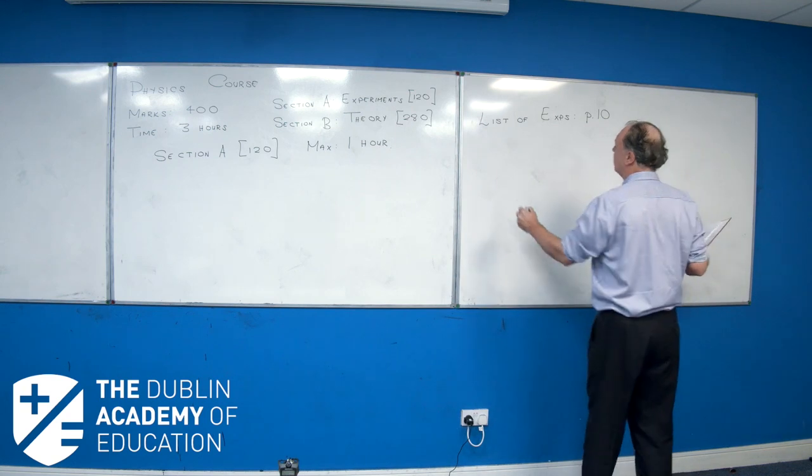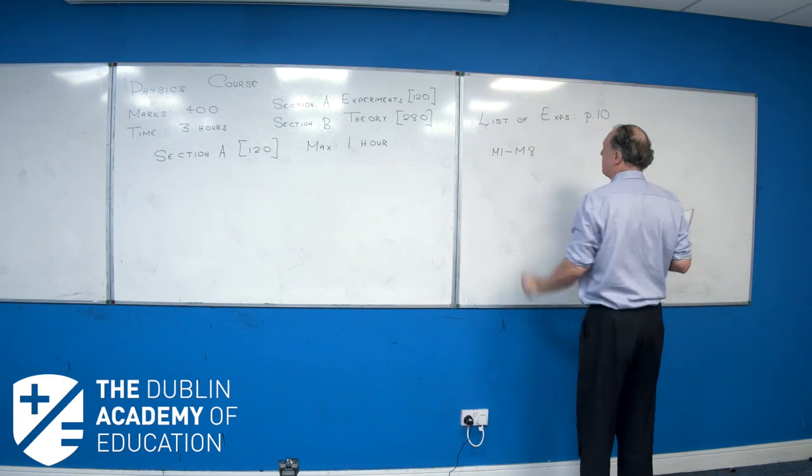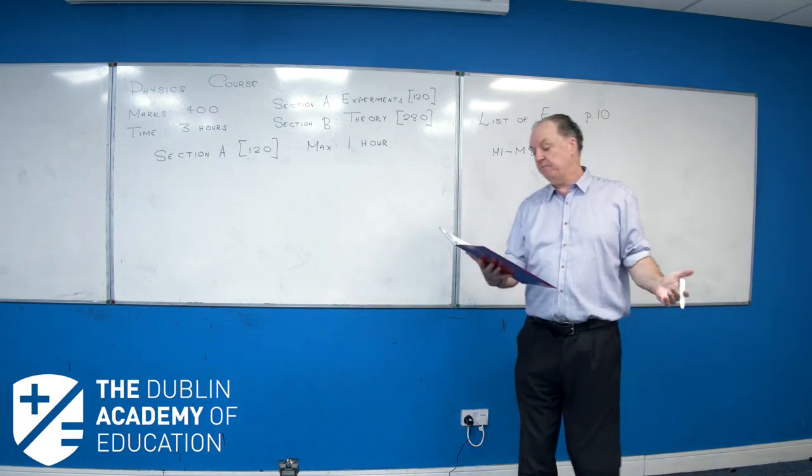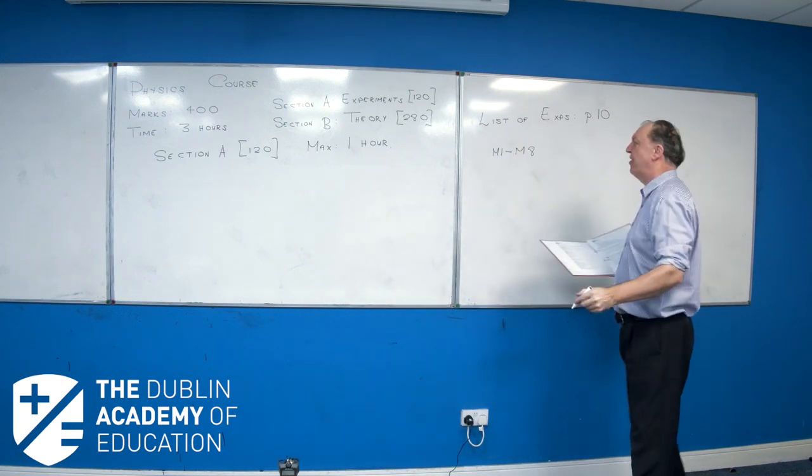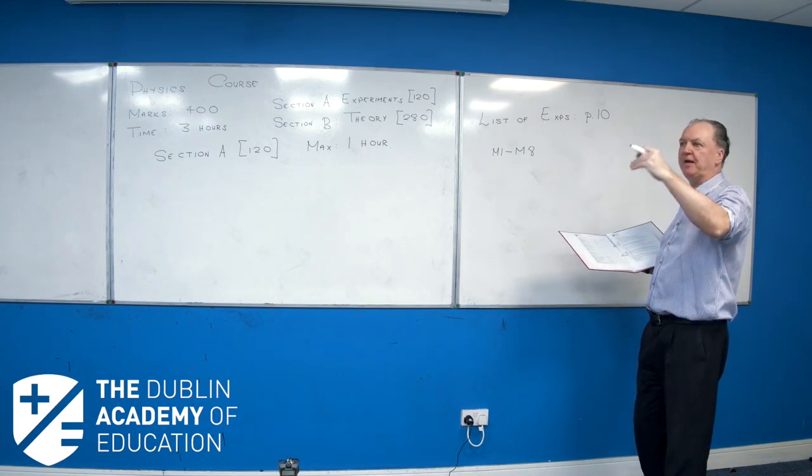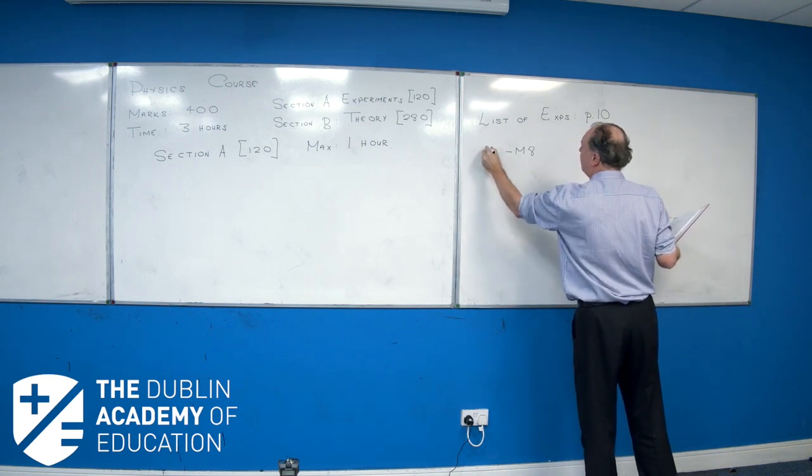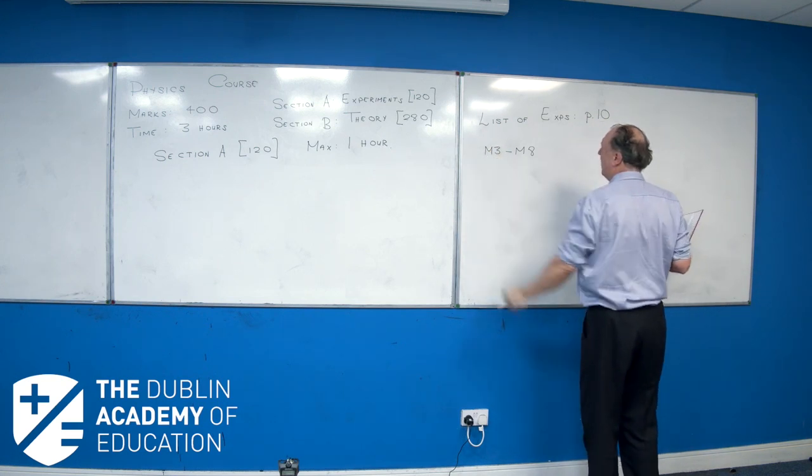So you've got mechanics, M1 to M8. Now, if you're doing the higher level, they won't ask you to do M1 or M2. Whereas M1 and M2 might be incorporated into M3 and M4. So when I do this, I'm really talking about doing the experiments from M3 to M8.